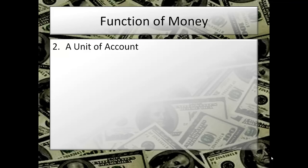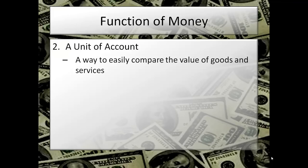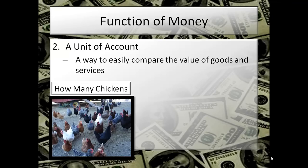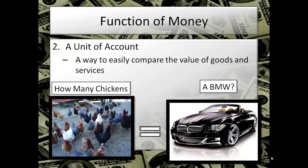The second function of money is a unit of account — a way to compare the value of goods and services. If I teach for five minutes, how much value is that compared to somebody who works on a car for five minutes? If I'm a tire manufacturer, how much is a tire worth compared to a TV? If we're raising chickens and I want to buy a BMW, how do I figure out the conversion rate, and is the BMW seller willing to trade me in chickens? It becomes very difficult.